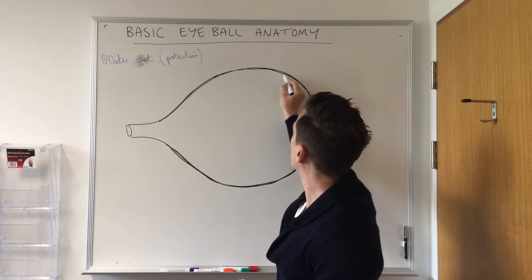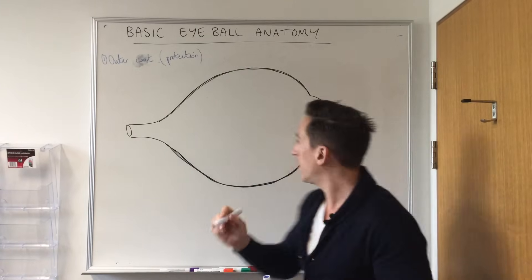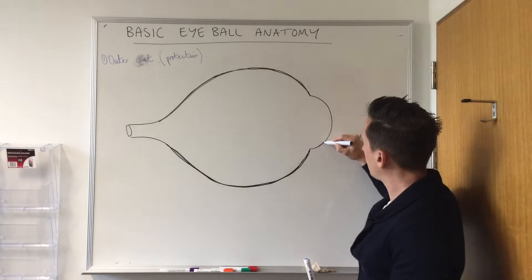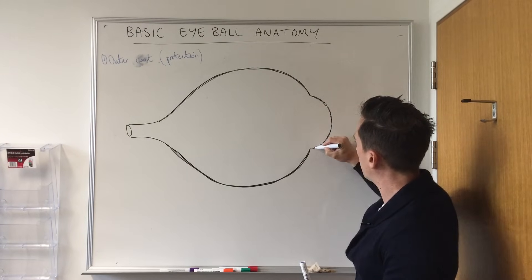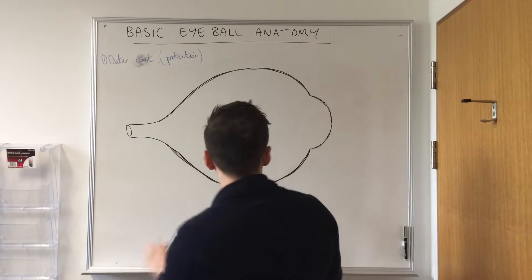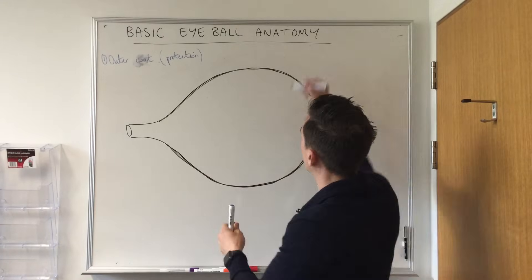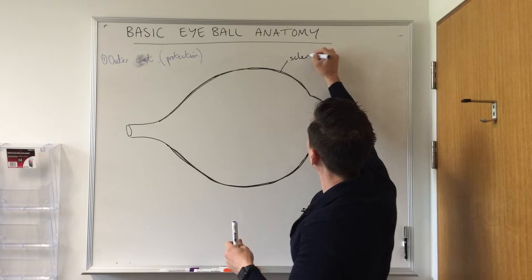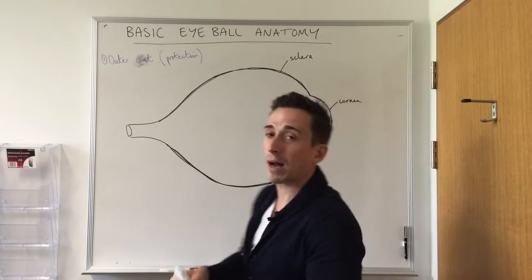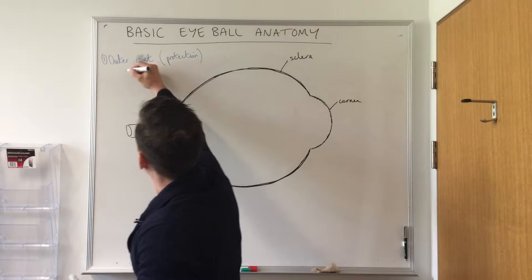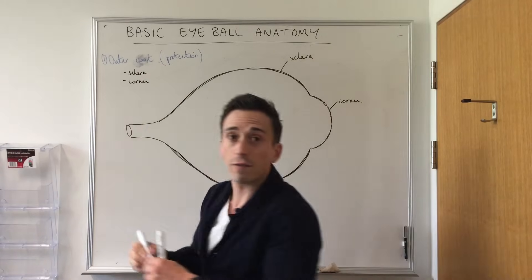The sclera makes up around 93% of the surface of the eyeball, while the cornea makes up around 7%. To put this into a frame of reference: the anterior aspect is the front of the eye and the posterior aspect is the back. The sclera and cornea are the two parts that make up the outermost portion of the eye.